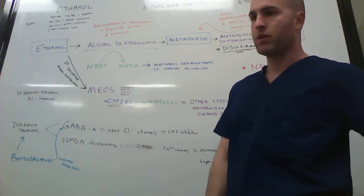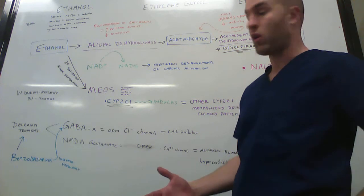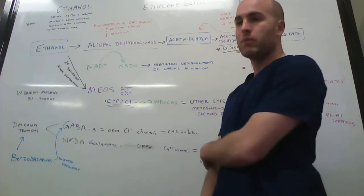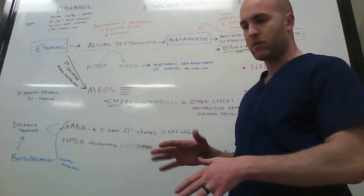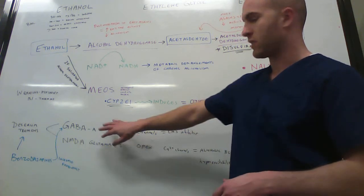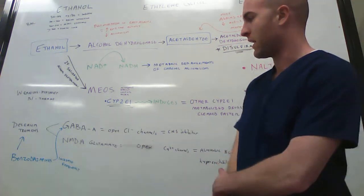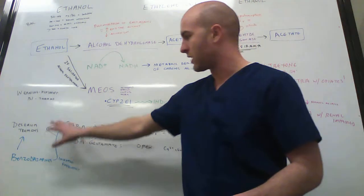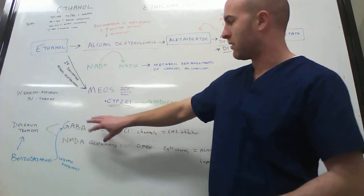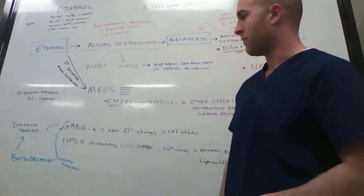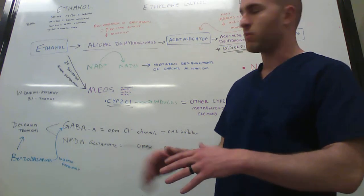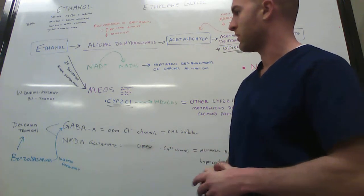And it can help treat one of the side effects of taking too much alcohol, which is the delirium tremens. Apparently, they shake and stuff. They think that's because of how the ethanol has messed up the GABA-A and NMDA. So the benzodiazepines can help this and stop the delirium tremens of the person's shaking, having those bad side effects.